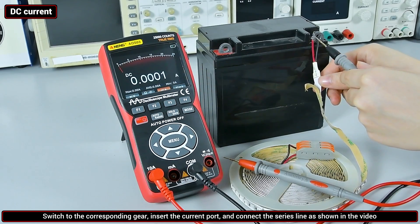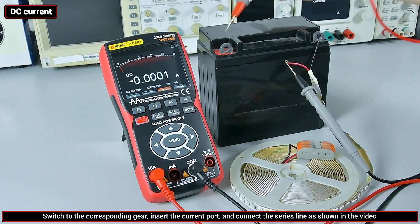DC current: switch to the corresponding gear, plug the watch pen into the current port and measure it by connecting it in series as shown in the video.